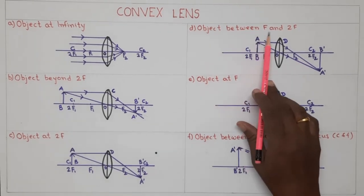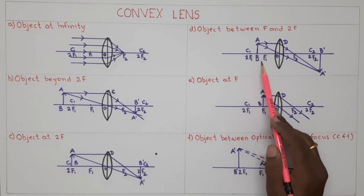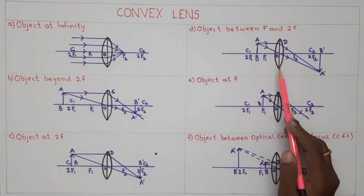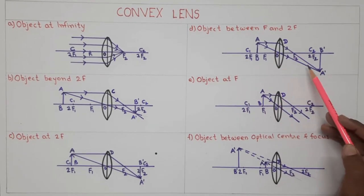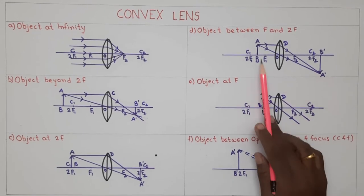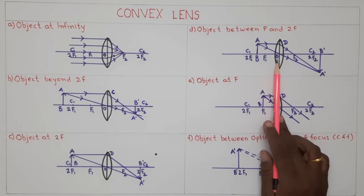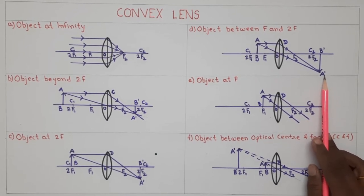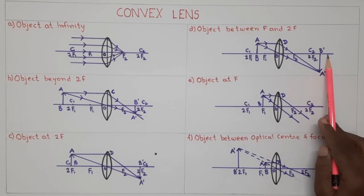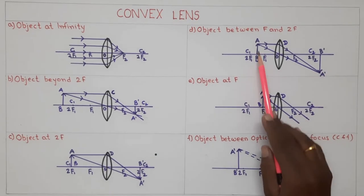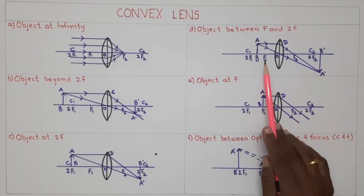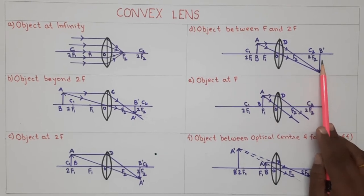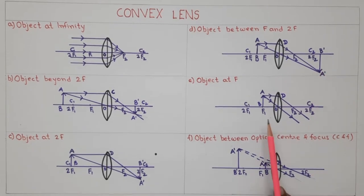Next case: object between f and 2f. Object AB is kept between f and 2f. Ray AD is parallel to the principal axis; after refraction it passes through focus F on the other side. Ray AO passes through center O and goes straight, meeting the first refracted ray at point A dash on the right side. Drawing A dash B dash perpendicular to the axis gives the image. When the object is placed between f and 2f, the image forms beyond 2f — real, inverted, and magnified.